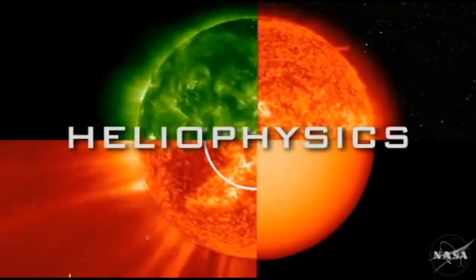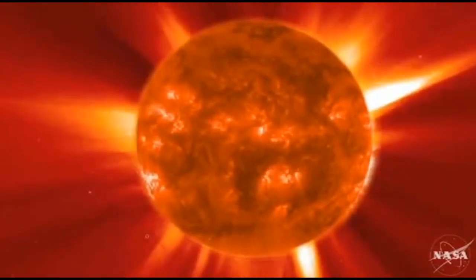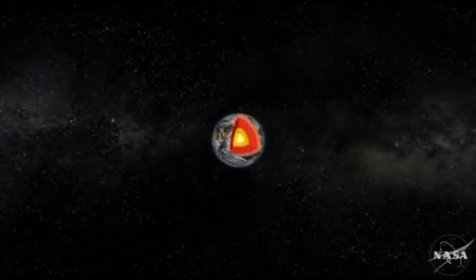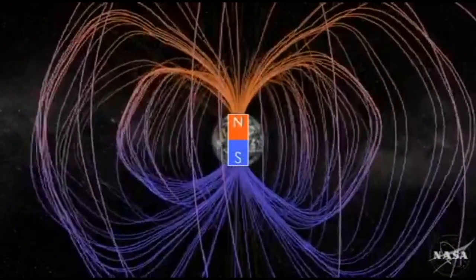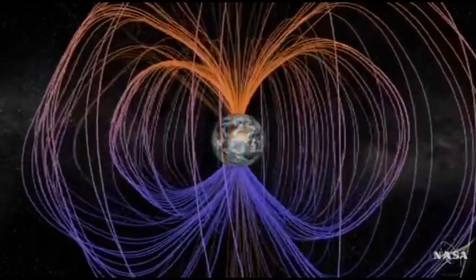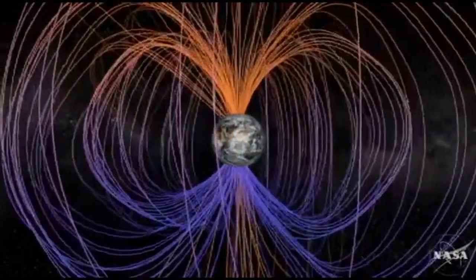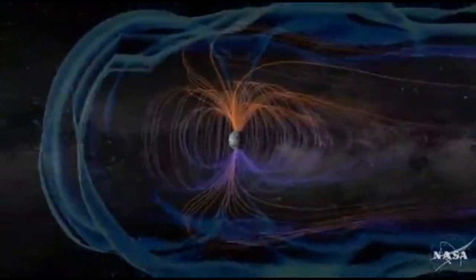Heliophysics is the study of the Sun and its interactions with Earth and the Solar System. Solar wind streams from the Sun carrying energetic charged particles. The Earth is protected from these particles by its magnetosphere. The Earth's rapidly spinning liquid metal core generates a magnetic field similar to a bar magnet, with a north and south pole. This field forms a magnetic shield. NASA's satellite observations have confirmed that this protective shield is always in place, but the solar wind causes it to change in size and shape.